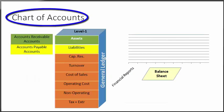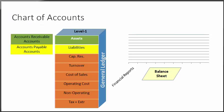The business partner master data balances do not appear in the chart of accounts. Only the receivable and payable accounts appear. The receivable and payable accounts accumulate the customer and vendor transactions in their balances. Therefore, the chart of accounts presents the complete financial status of the company and the financial reports show the full picture. For example, the balance sheet contains accounts receivable and accounts payable. The general ledger contains assets, liabilities, capital and reserves, turnovers, cost of sales, operating costs, non-operating, and tax plus externals.